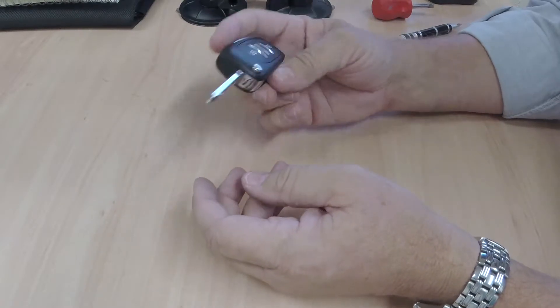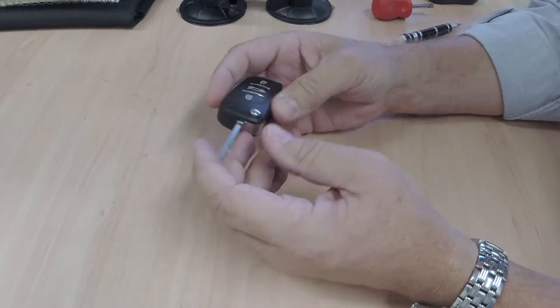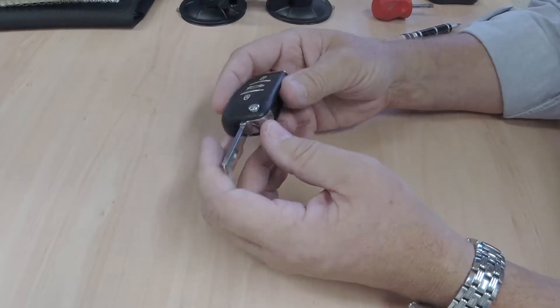I'll show you how to replace the battery in a Citroen DS4 remote key fob. This is a 2013 model.